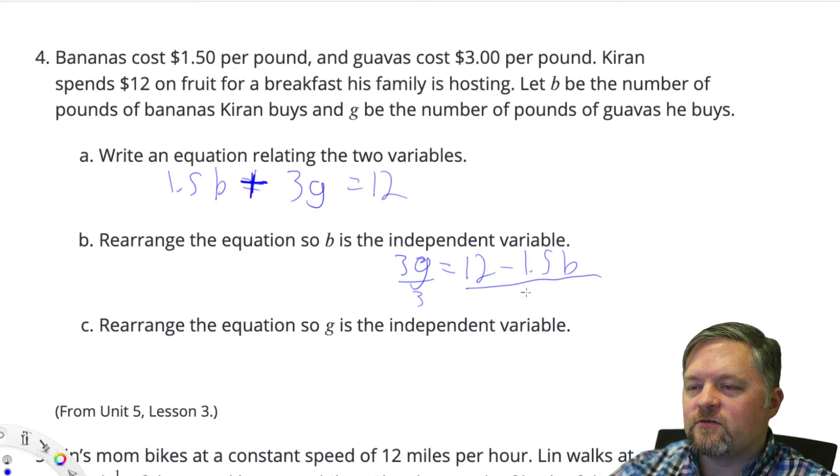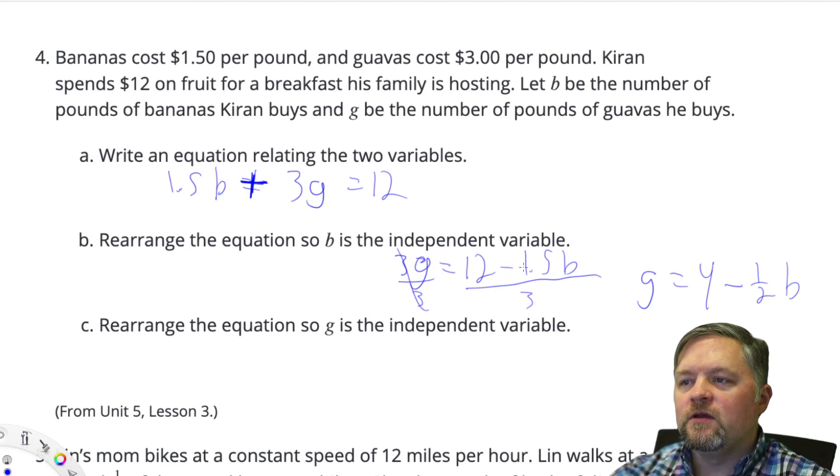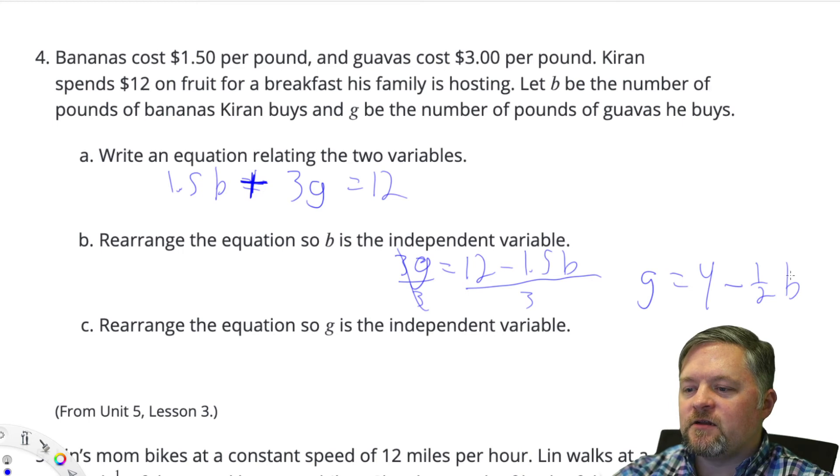Now to get the g by itself, we have to divide by 3. Do it to one side, you're going to do it to the other. Those will cancel. This one is g equals 12 divided by 3 is 4 minus 0.5b. So now b is the independent variable because g depends on b.